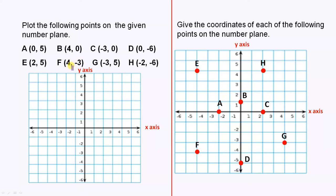They were separated by a comma, and the first digit or the first number represented the x-axis on a number plane, and the second number represented the y-axis on the number plane.